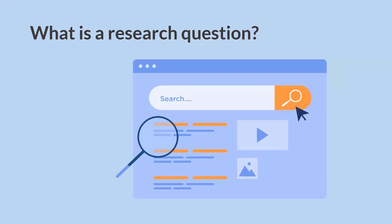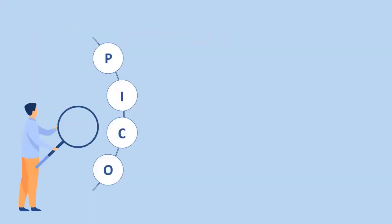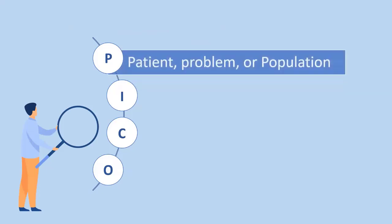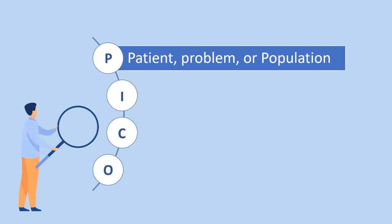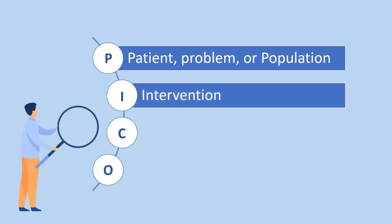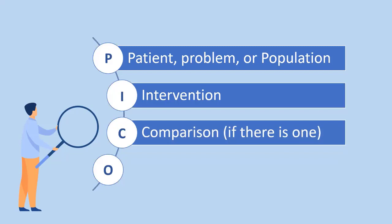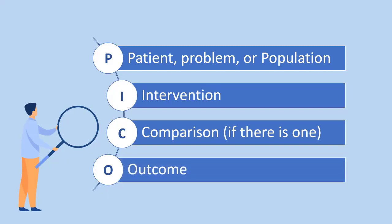In medicine, we often use a tool called PICO to help create a good research question. PICO is a method used to create a researchable question based on a clinical topic and helps identify four concepts. P is the patient, problem, or population — how would you describe your patient and what disease or condition are you interested in? I is intervention — what treatment or intervention is being delivered? C is comparison — is there an alternative treatment you are considering? And O is outcome — how is the effect measured and what are you hoping to accomplish or improve?